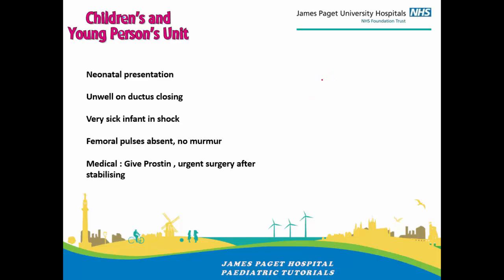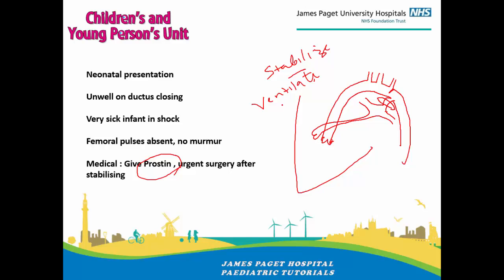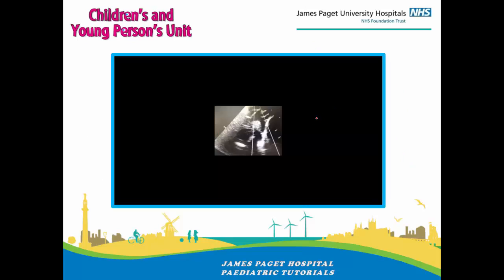Let's go into a little more detail on the neonatal presentation and how to manage it. The ductus arteriosus is key. As soon as you diagnose these patients — even clinically, prior to confirming with an echocardiogram — your key aim should be to keep the ductus open. Give prostaglandin (Prostin), given intravenously. Then stabilize the child: ventilate if profoundly sick, fluid resuscitate if dehydrated and in shock, give inotropes if blood pressure is low, then send the child for surgery.